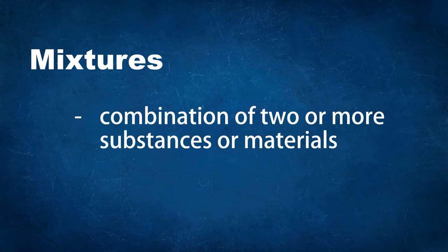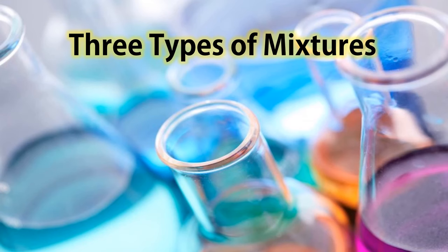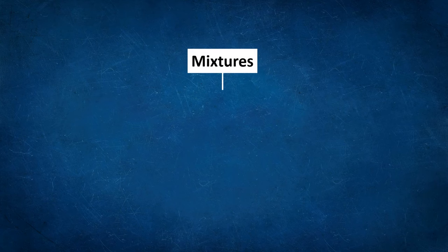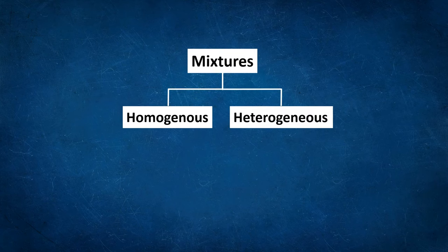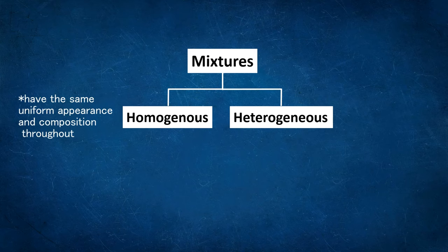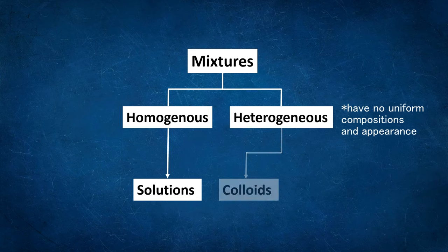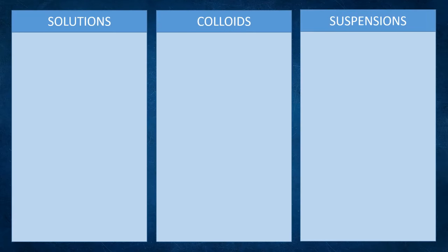Mixtures are combinations of two or more substances or materials. There are three types of mixtures: solutions, colloids, and suspensions. Mixtures either form homogeneous mixtures or heterogeneous mixtures. Homogeneous mixtures have the same uniform appearance and composition throughout — solutions fall under this type — while heterogeneous mixtures have no uniform composition or appearance, and include colloids and suspensions.